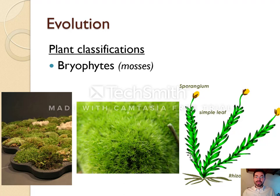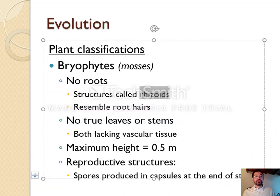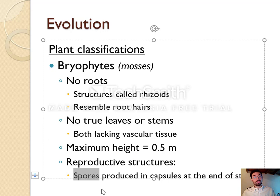The stalk-like structure on moss is called a phallus, and at the top is the sporangium — though you don't really need to know those words. To summarize bryophytes: they have no roots (rhizoids instead), no true leaves or stems, and no seeds (spores instead).